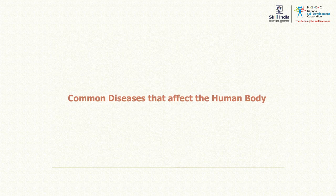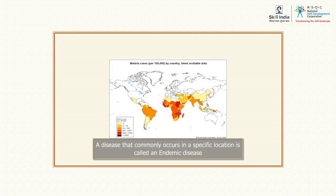Common diseases that affect the human body. A disease that commonly occurs in a specific location is called an endemic disease. Some of the common diseases that are observed in our geographical region are discussed below.